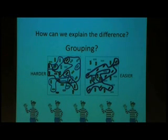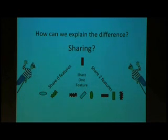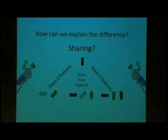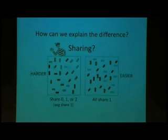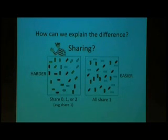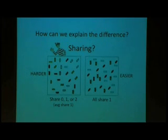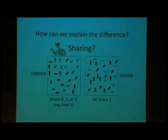But there's also another condition to take into account, which is sharing. Since we're performing a triple conjunction visual search task, our target can share zero, one, or two features with our distractors. For example, one distractor shares the color and the shape with the target, another shares the shape and the orientation, and so on. In the harder condition we have distractors sharing zero, one, or two features, while in the easier condition all distractors share just one feature. Maybe the distractors sharing two features — meaning they are more similar to the target — cause us to spend more time deciding whether they are a distractor or the target.